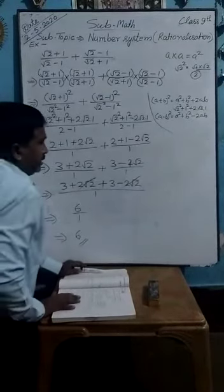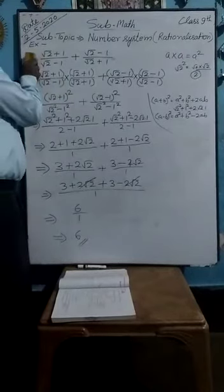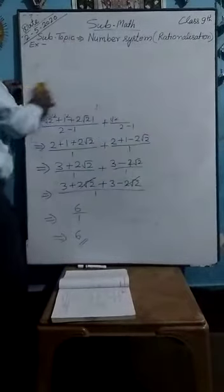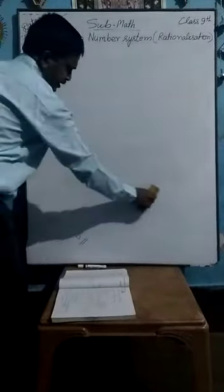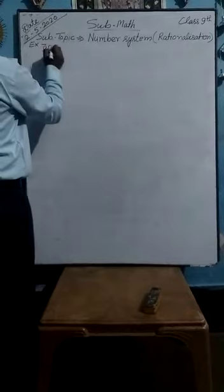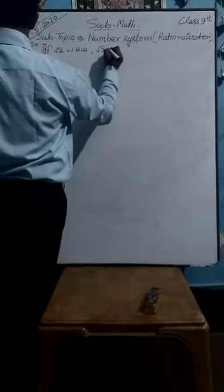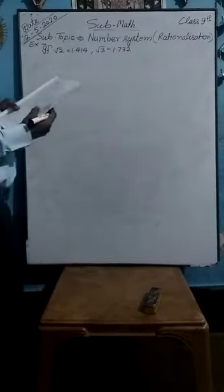Perhaps you have understood the method of solving this type of question. Now another example I want to tell you: for rationalization, if values of roots are given, then you have to use that value in the question. For example, question number 4: if under root 2 is equal to 1.414, and under root 3 is equal to 1.732, then find the value of each of the following. The question given here is: under root 2 plus 1 upon under root 2 minus 1.